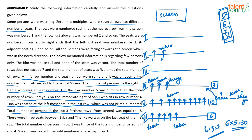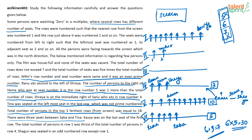Kavya is on the last seat of the first row. The total number of people in row 1 is thrice the total number of people in row 4. Row 4 has 3 people, so row 1 has 3 × 3 = 9 people. Kavya is sitting in seat 9 of row 1.